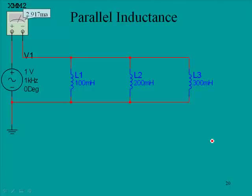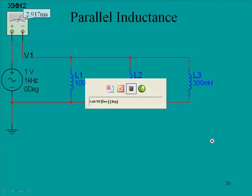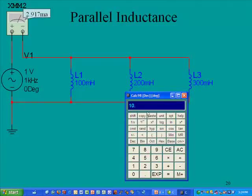Let's calculate the parallel inductance first. This is the same formula we use for resistance. 100 milli is 0.1, so we'll do 0.1, then the 1 over function, add that to 0.2, 1 over, then plus 0.3, 1 over.